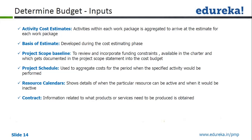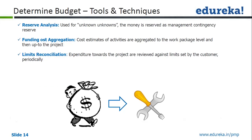Project schedule is used to aggregate costs for the period when the specific activity would be performed. Since it is a time-based budget, we need the project schedule as input. Resource calendar has availability of the resources for your project, including shift information. Contract information related to what product or service needs to be produced is obtained from the contract, along with any legal requirements or funding constraints in the contract — all of which become inputs.